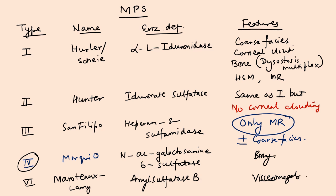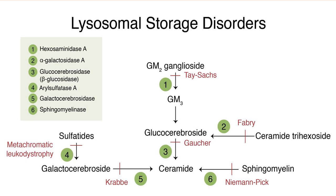Type 6 is Maroteaux-Lamy disease. The enzyme deficient is arylsulfatase B. Type 4 is characterized by predominantly bony abnormalities and type 6 is similar to Morquio disease but there are less spine abnormalities, more risk of visceromegaly. This is the differential diagnosis of mucopolysaccharidosis important from entrance point of view.